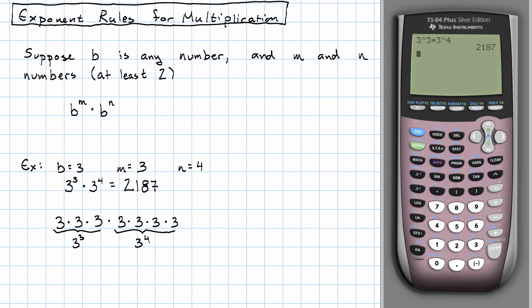You know what we have here? We have 7 copies of the number 3 all multiplied together. 3 to the 3rd times 3 to the 4th is 3 to the 7th.